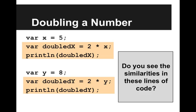I've highlighted the portions that are similar, and I'm doing the same thing over and over again. I'm taking some variable and I'm multiplying it by 2 and printing it out. We want to avoid repeated code.